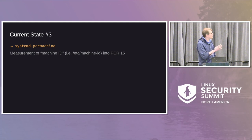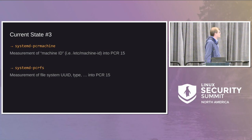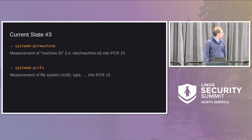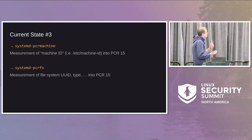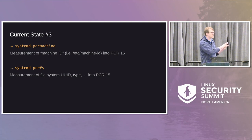So PCR 15 contains both the root volume key and the machine ID — first the volume key, then much later when we have access to the machine ID. systemd-pcrfs also measures into PCR 15: it measures the file system UUID and type, and can be instantiated multiple times if you have multiple file systems. Once all three — systemd-cryptsetup measuring the volume key, systemd-pcrmachine measuring the machine ID, and systemd-pcrfs measuring file systems — have run, PCR 15 is done and can usefully identify the machine.